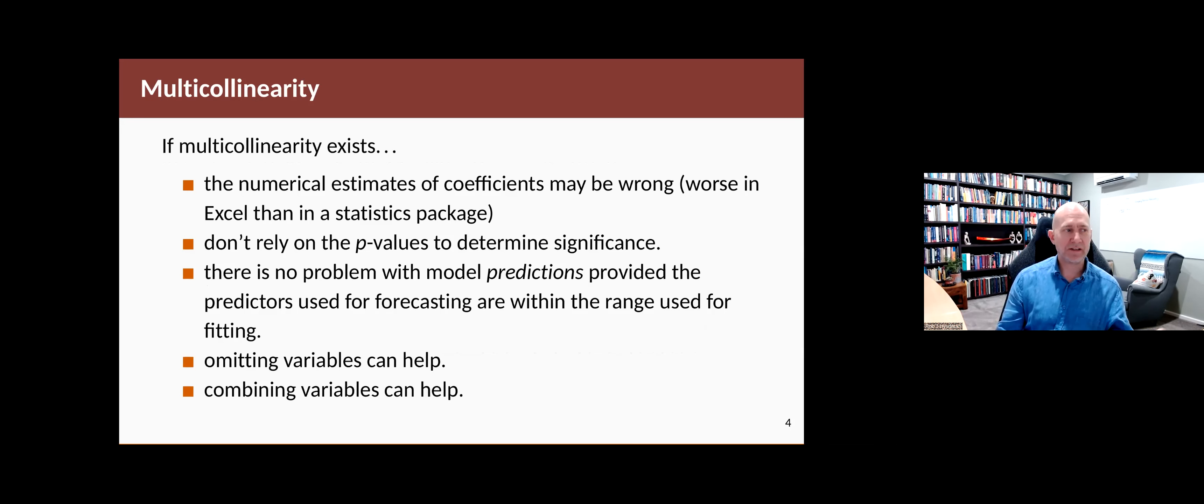Now, why is this a problem? Well, if it's an exact multicollinearity, then you can't actually fit the regression. But even if it's not exact, if the correlations are higher than 0.9 but less than 1 or between minus 1 and minus 0.9, you can have some difficulties in estimating the coefficients. Good statistical software such as R and other reputable statistics packages do their best to use good methods for estimating the parameters so that this is not a really big concern unless the correlations are very, very close to plus or minus 1.